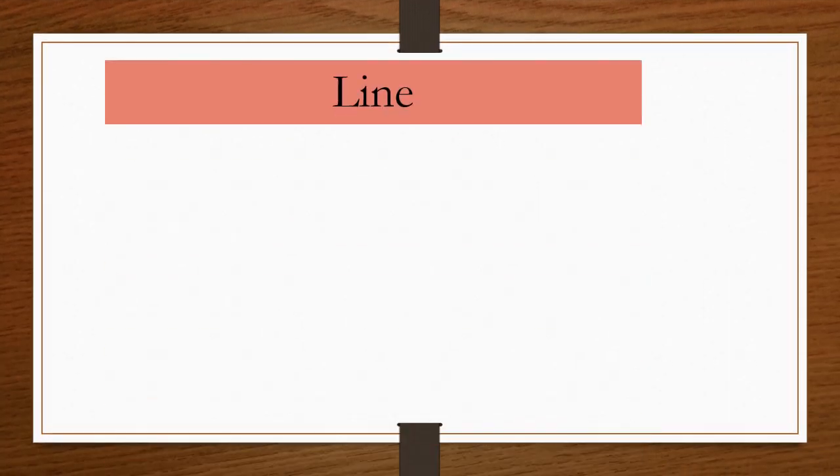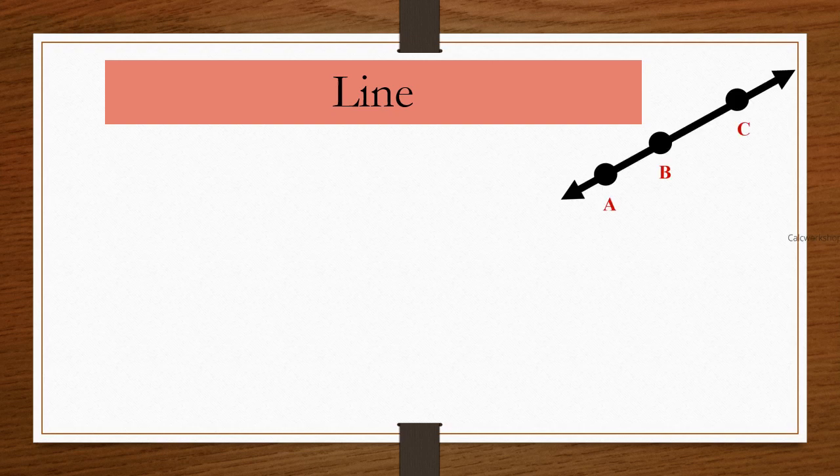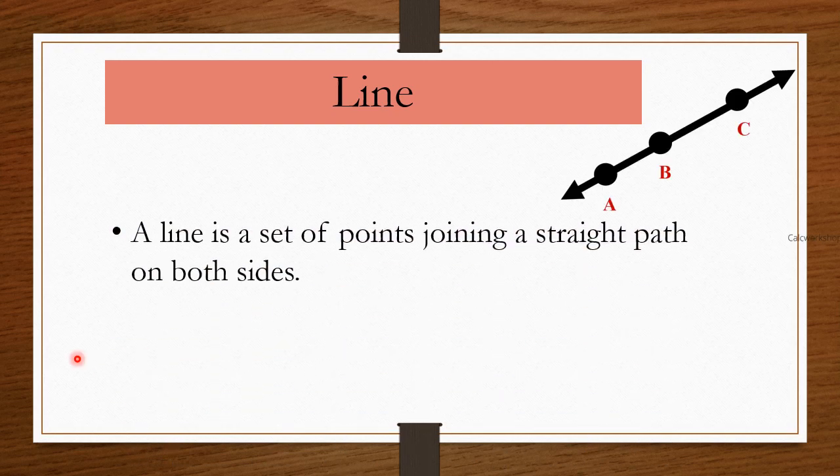Okay students, now look at the definition of the line. A line is a set of points joining a straight path on both sides.